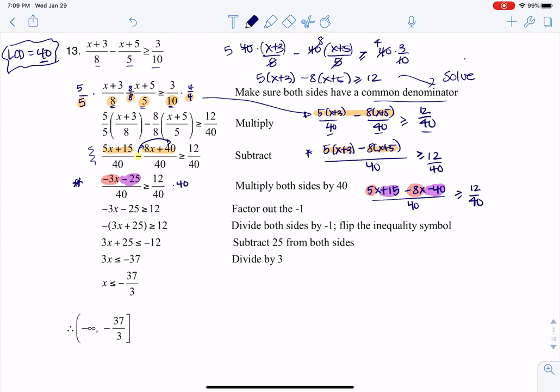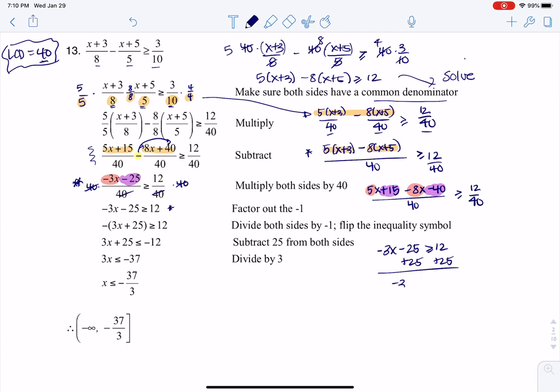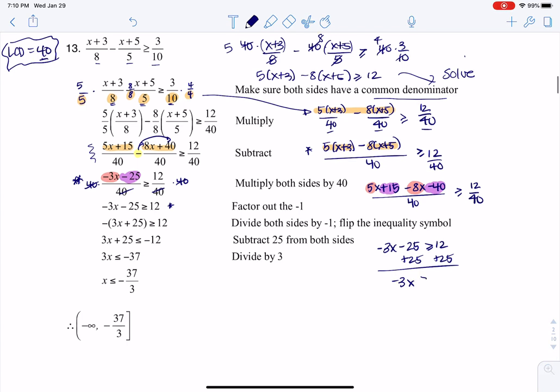I'm going to multiply both sides by 40 and the denominators will cancel out. And that's going to get me to negative 3x minus 25 is greater than or equal to 12. Now I had fun and factored out a negative. I think what most of you will do is negative 3x minus 25 is greater than or equal to 12. You'll add 25 to both sides, right? And you'll have negative 3x is greater than or equal to positive 37. I'm going to divide by negative 3. And then we'll keep in mind when we divide by a negative, we have to change the direction of the inequality.